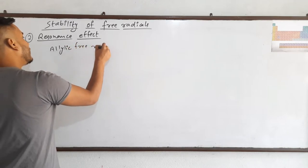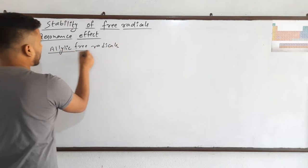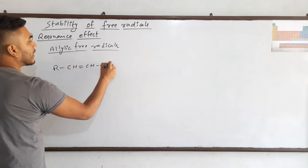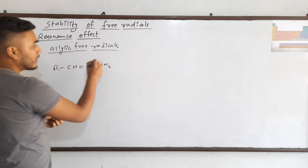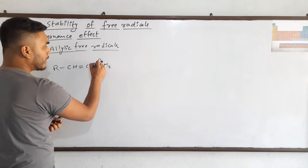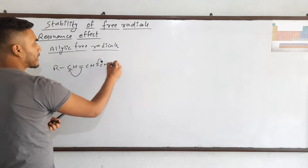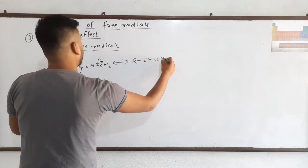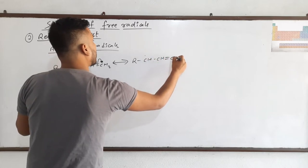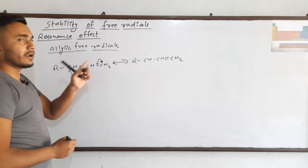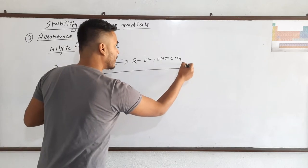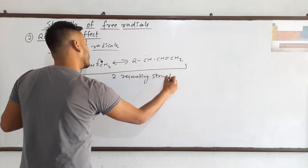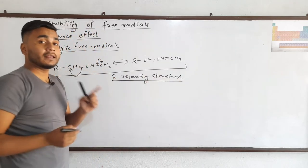Allylic free radicals — how many resonating structures can they make? Allylic free radicals are simply RCH=CH-CH2 dot. The electron will come here, this bond will be broken and the electron will move over, giving another structure: RCH dot-CH=CH2. These are the same structures in two different forms, so two resonating structures are possible in the case of allylic free radicals.